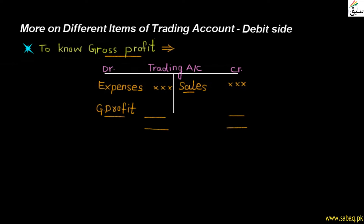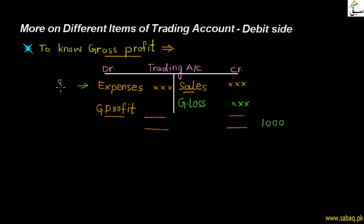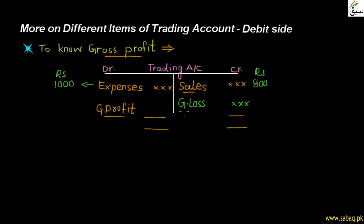But if the expenses are more and the sales amount is less, then a loss will come — we will show the gross loss. For example, if the sales amount is $1,000 and the expenses are $800, we minus them and gross profit comes. But if the situation is reversed — expenses are $1,000 and the sales amount is only $800 — then when we minus $800, the gross loss will come.